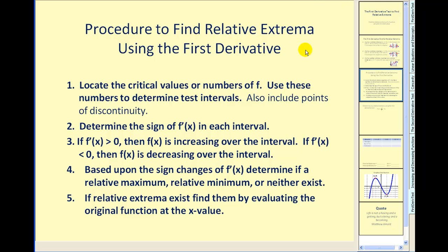So here's what we're going to do to find the relative extrema using the first derivative. Step one: locate any critical values of the function, and use these numbers to determine our test intervals. Step two: determine the sign of the first derivative. As we learned from a previous video, if the first derivative is positive it's increasing on the interval, and if it's negative it's decreasing. Step four: based upon the sign changes of the derivative, determine if any relative extrema exist. Then if relative extrema exist, evaluate the original function at the given x value to find the relative max or min.